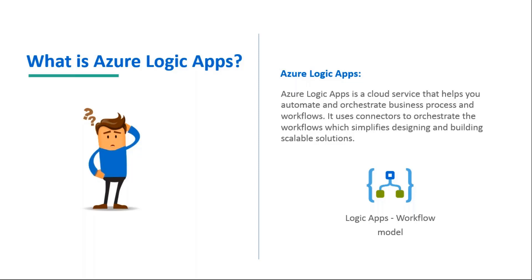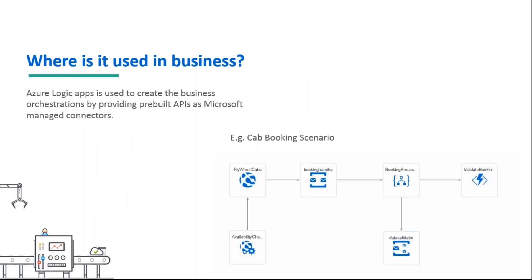Azure Logic Apps is used to create business orchestrations by providing pre-built APIs as Microsoft-managed connectors. To give an example, let's take a simple cab booking scenario. When the user books a cab through the web application, the booking message will be sent to the service bus. When there is a message, the Logic App will get triggered and validate the message — whether it is valid or not — with function apps, and send those messages to topic subscriptions with valid and invalid subscriptions, which consist of rules defined to filter the messages.